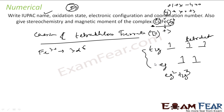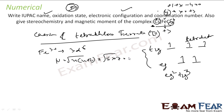So that is the electronic configuration for the tetrahedral case. Now let's find the magnetic moment. Magnetic moment is root of n(n+2). There are 5 unpaired electrons, so it is root of 5×7 = root 35, which is approximately 5.92 BM. Now for hybridization: all d orbitals are occupied, so we can't use d orbitals. The hybridization will be sp3.